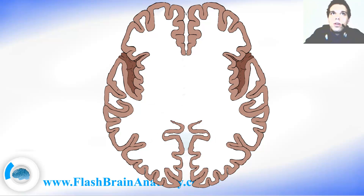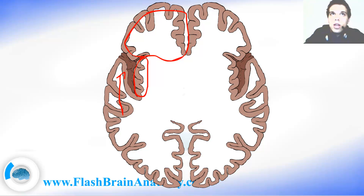You can probably notice this is the temporal lobe over here, and this is the frontal lobe of the brain. The insula — the insular cortex — is enclosed here, and you can see it. If we pull down this temporal lobe, we would be able to see the insula. Or we can lift up the frontal lobe.